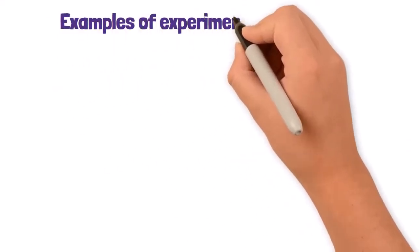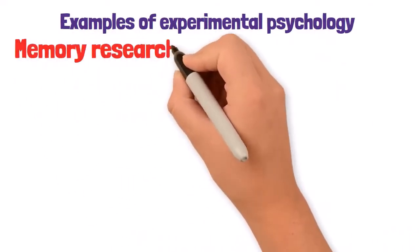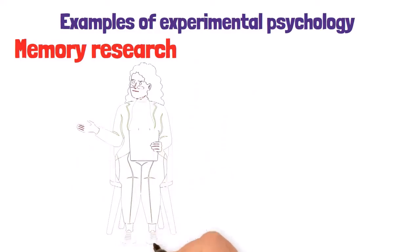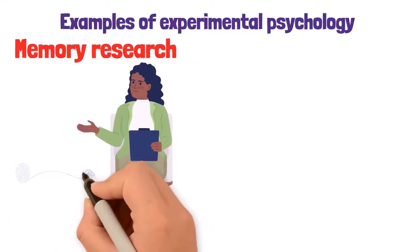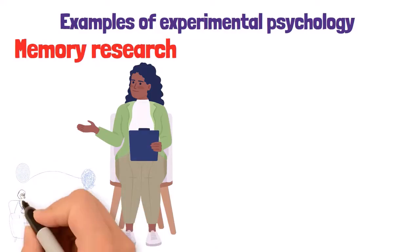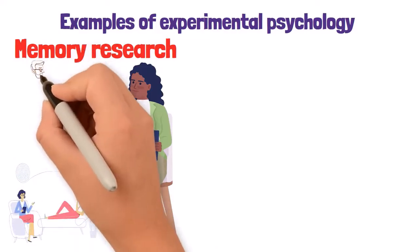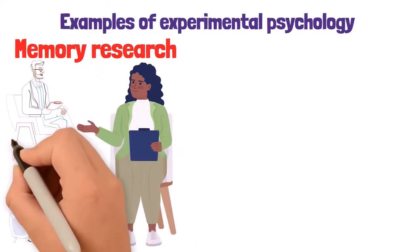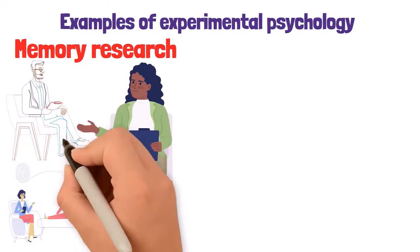Here are two examples of experimental psychology. The first example involves memory research. A researcher might study how different types of distractions affect short-term memory. Participants could be asked to memorize a list of words while being exposed to various distractions, such as noise or visual stimuli. The researcher would then measure how many words participants can recall in each condition, providing insights into how distractions impact memory.